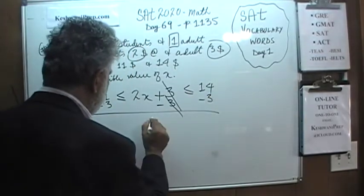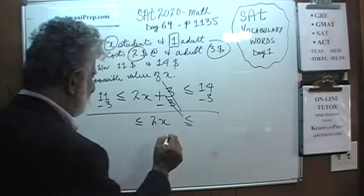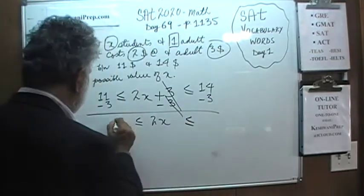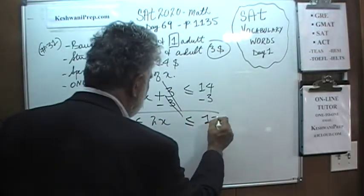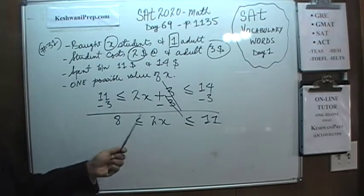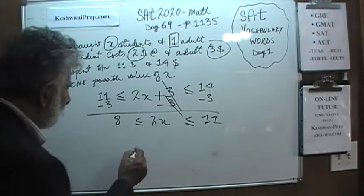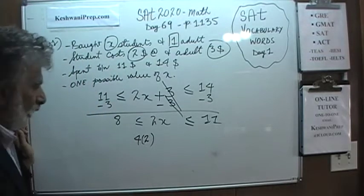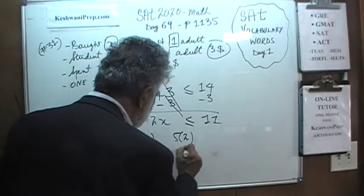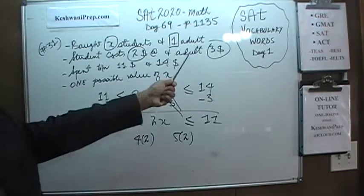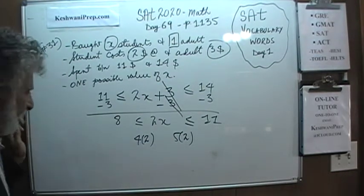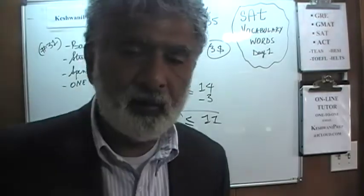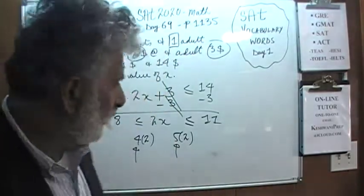We end up with 2X here, less than or equal to. And here we are going to end up with 11 minus 3 which is 8. Here we are going to end up with 11. 2 times X has to be between 8 and 11 which means we can buy 4 student tickets which will cost $8 exactly or we can buy up to 5 student tickets which will cost $10. So the possible answers are 4 or 5. You can grade in either one of these two answer choices.